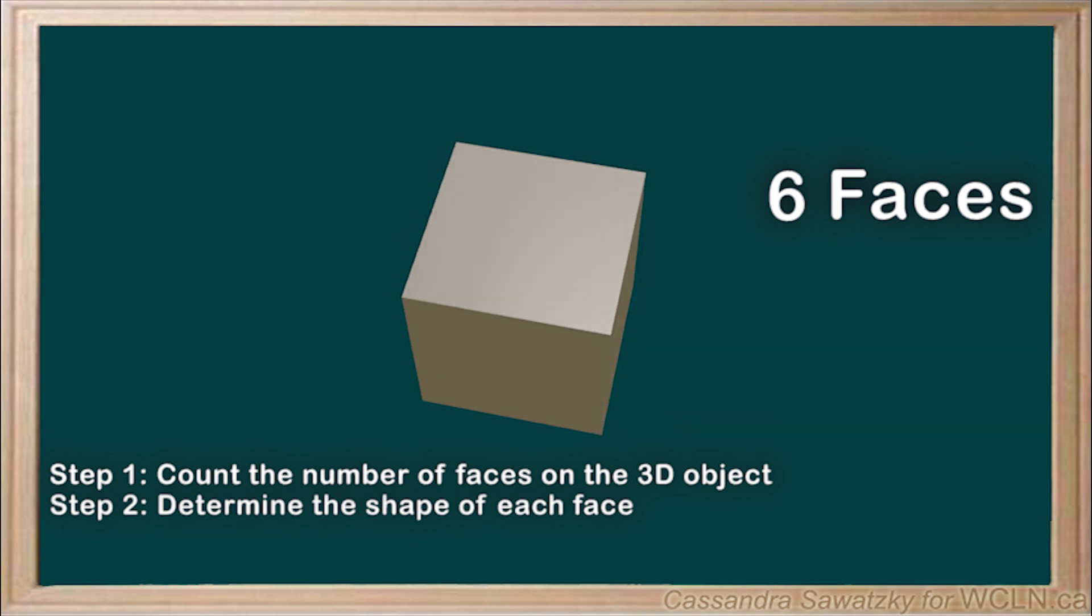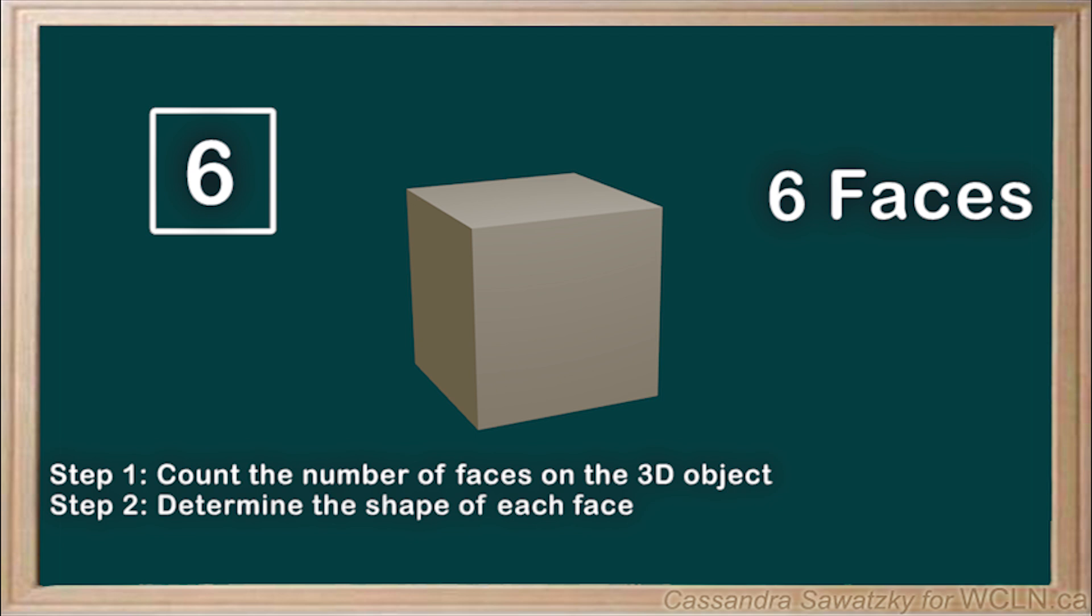Step 2. Determine the shape of each face on the object. As you can see, each face on this cube is a square. So we have six square faces.